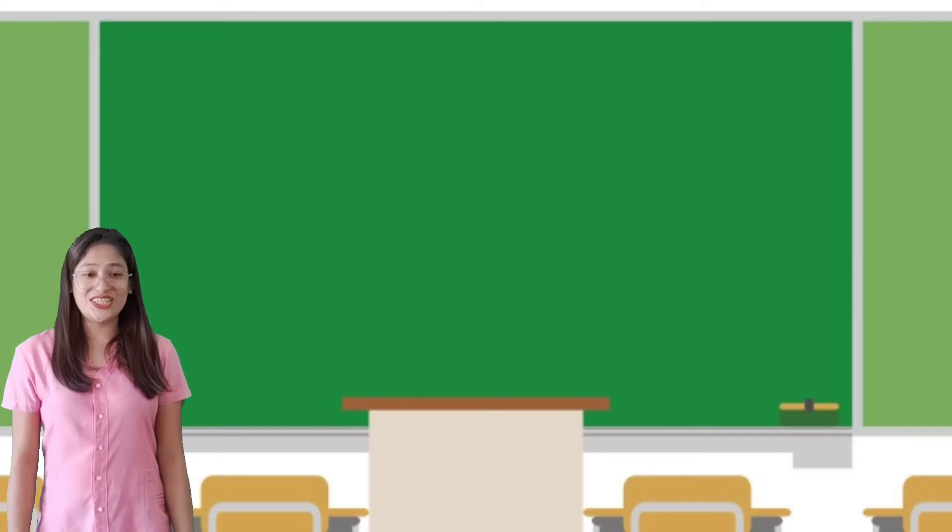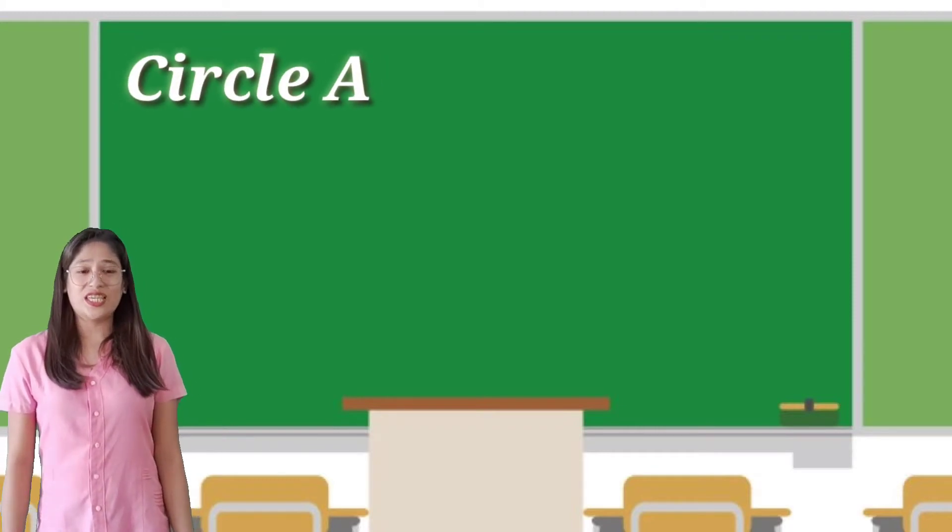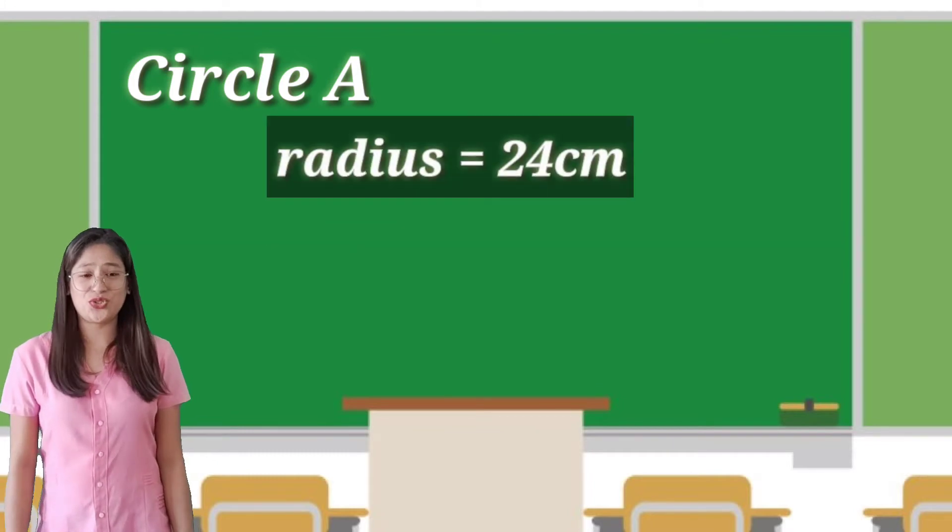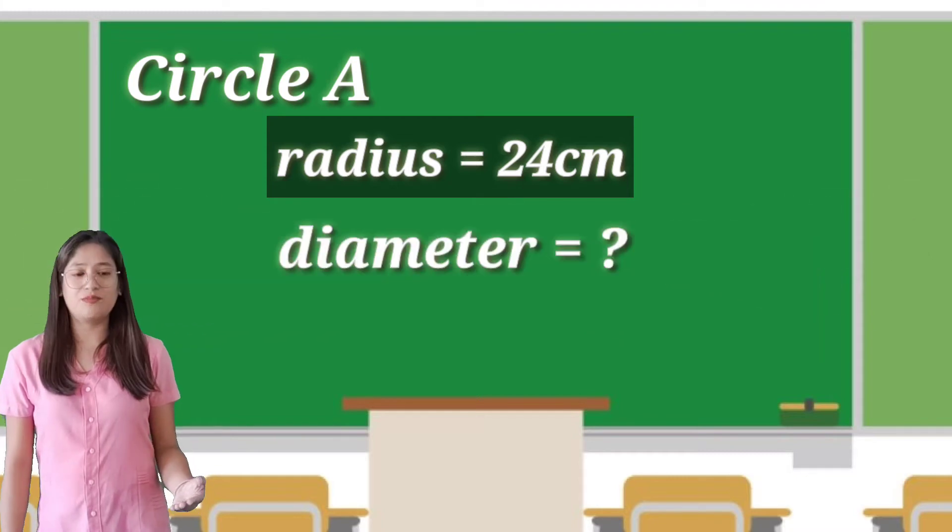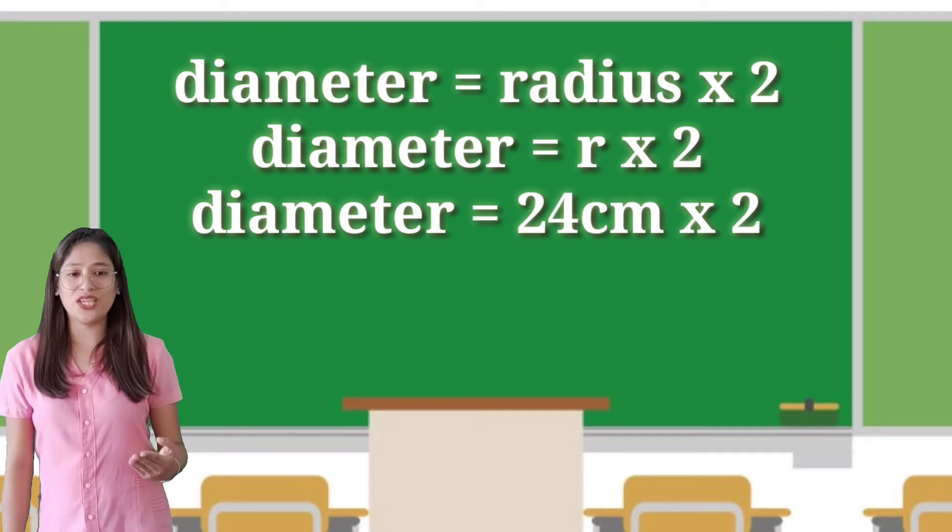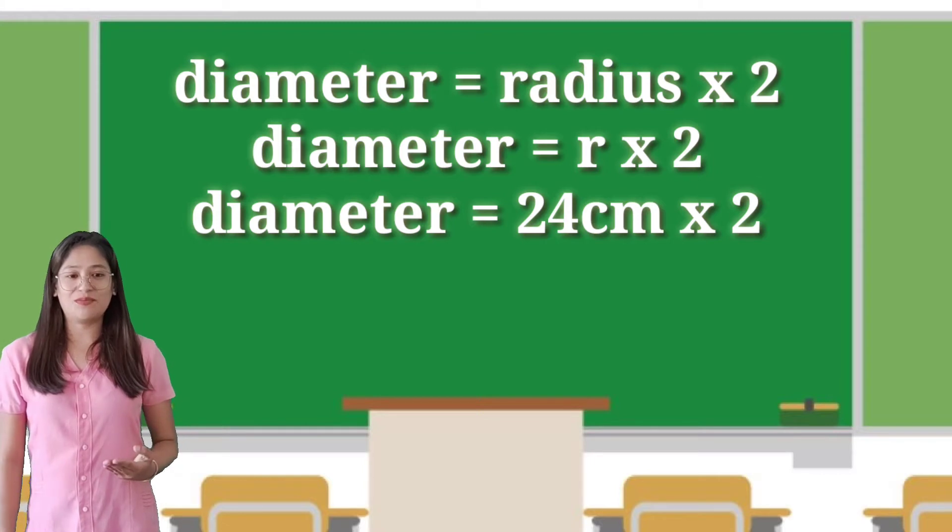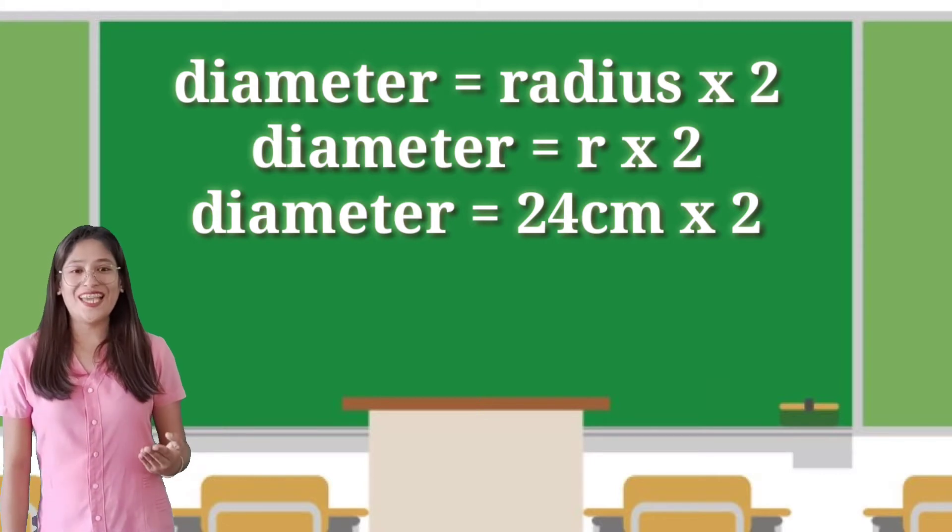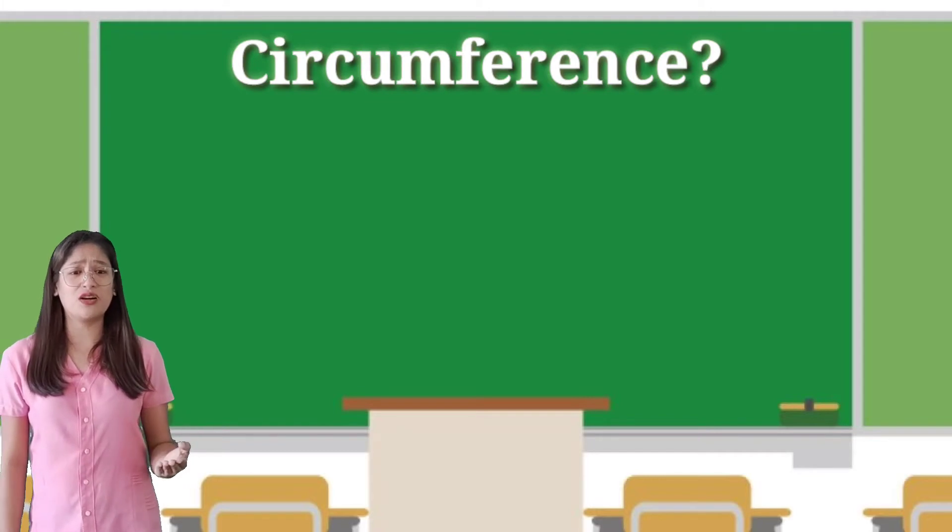Okay, let's check. In circle A, the given is the radius. How will we find the diameter? All we have to do is multiply the radius, 24 cm, by 2 to get the diameter. What's the answer? Very good, 48 cm. What's the circumference of circle A?